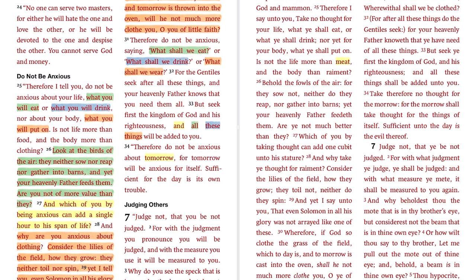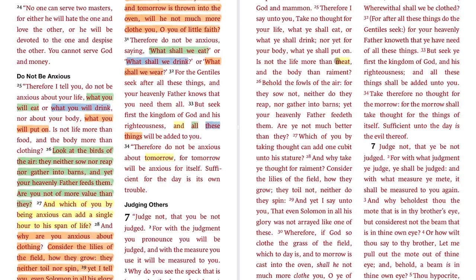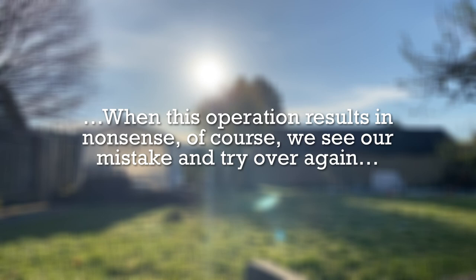I highly doubt the King James translators made a mistake here — English simply changed over time. In passages like this one, where you don't have much contextual hint that you're talking about something other than the flesh of animals, we need to remember what C.S. Lewis said about the 'dangerous sense.' He said the dominant sense of any word lies uppermost in our minds wherever we meet the word, and our natural impulse will be to give it that sense. That is definitely what I've done — reading the Sermon on the Mount, I thought Jesus was talking about steak.